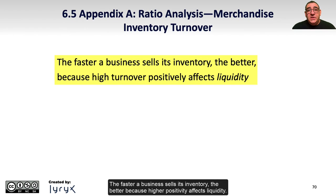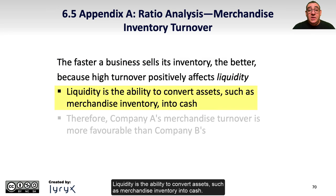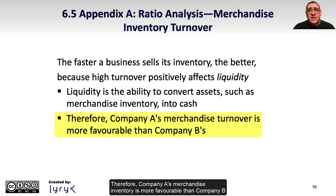The faster a business sells its inventory, the better, because higher turnover positively affects liquidity. Liquidity is the ability to convert assets such as merchandise inventory into cash. Therefore, Company A's merchandise inventory is more favorable than Company B because it can turn its inventory into cash faster than Company B can.